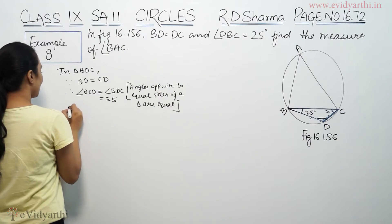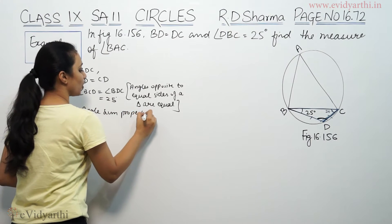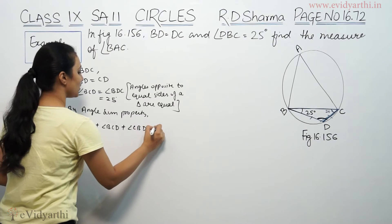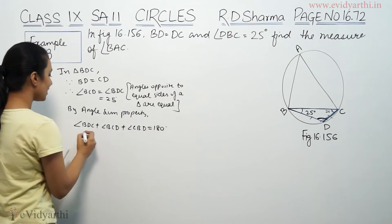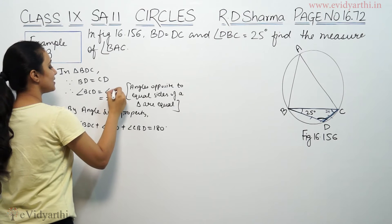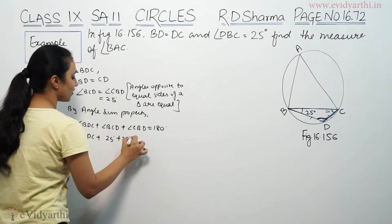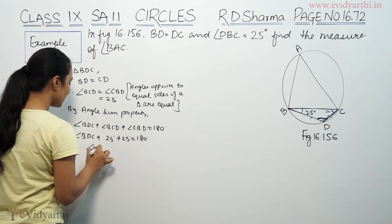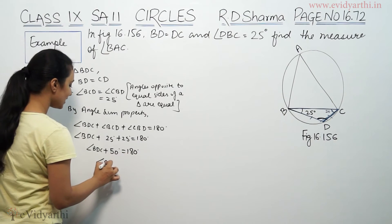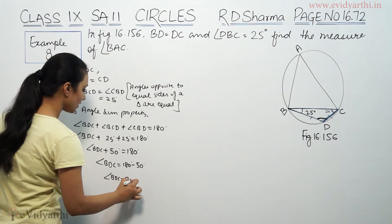By the angle sum property, angle BDC plus angle BCD plus angle CBD is equal to 180 degrees. We have BCD and CBD both as 25 degrees. So BDC plus 25 plus 25 equals 180, meaning BDC equals 180 minus 50, which gives us BDC equal to 130 degrees.